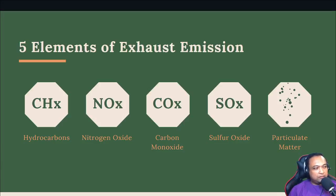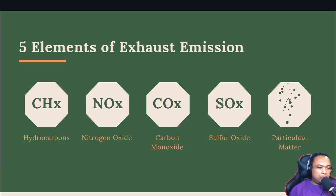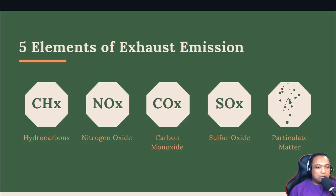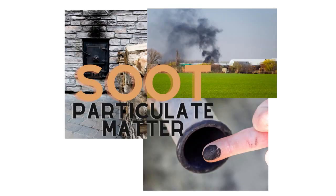The five elements of exhaust emission are: first, hydrocarbon; second, nitrogen oxide (NOx), which has an unstable bonding; third, carbon monoxide, which is harmful to our health; fourth, sulfur oxide; and fifth, particulate metals — these contain other elements including black particles.